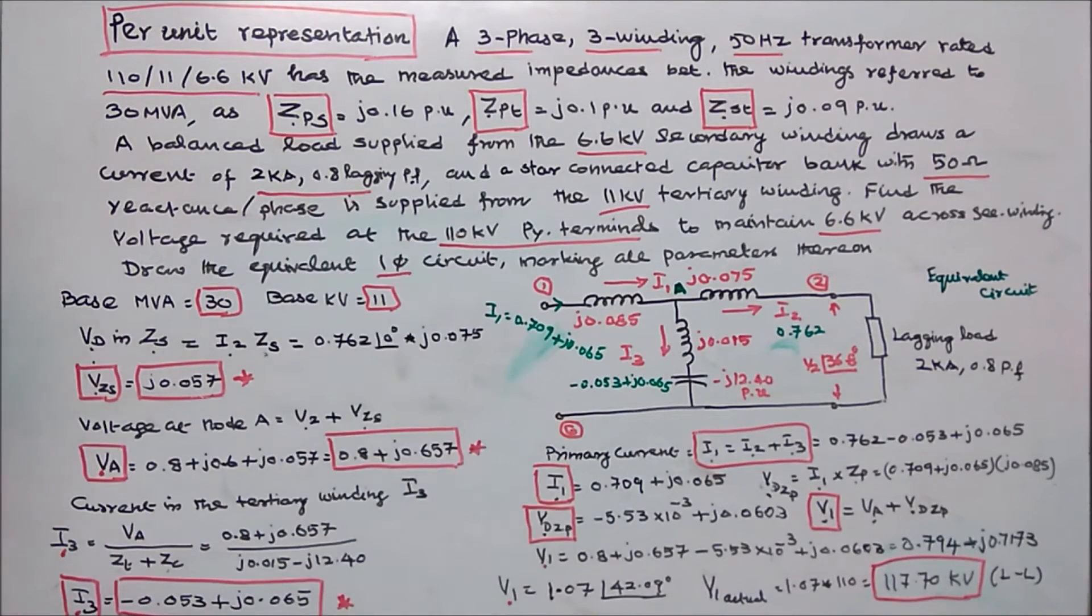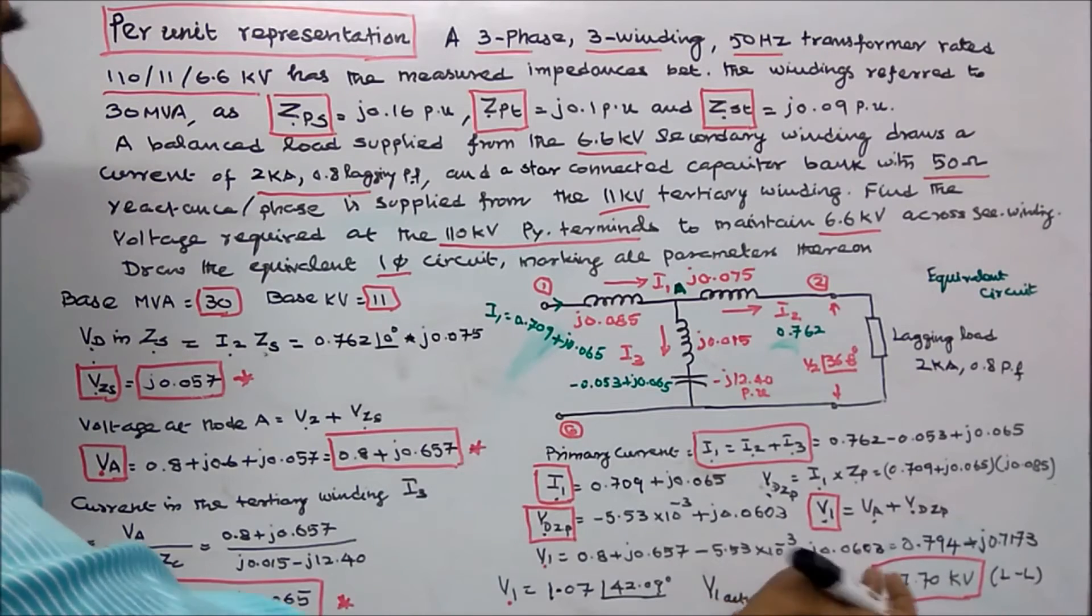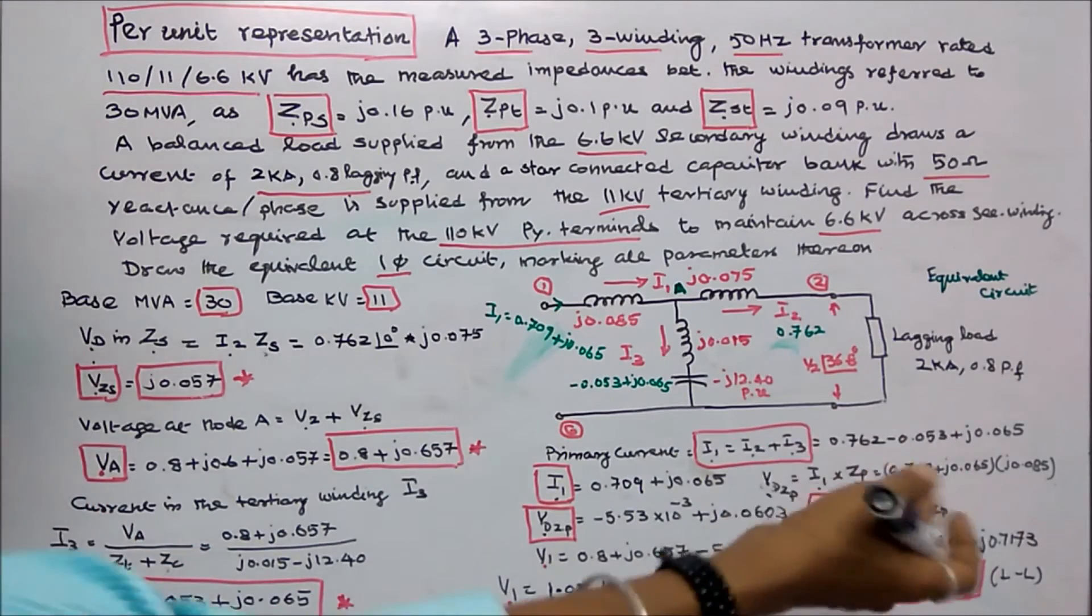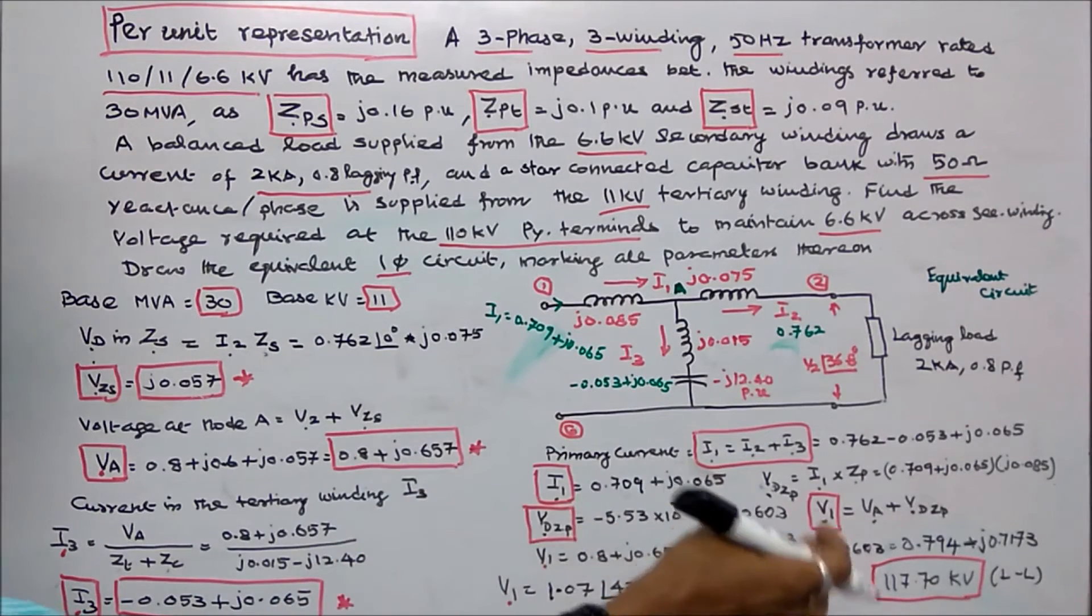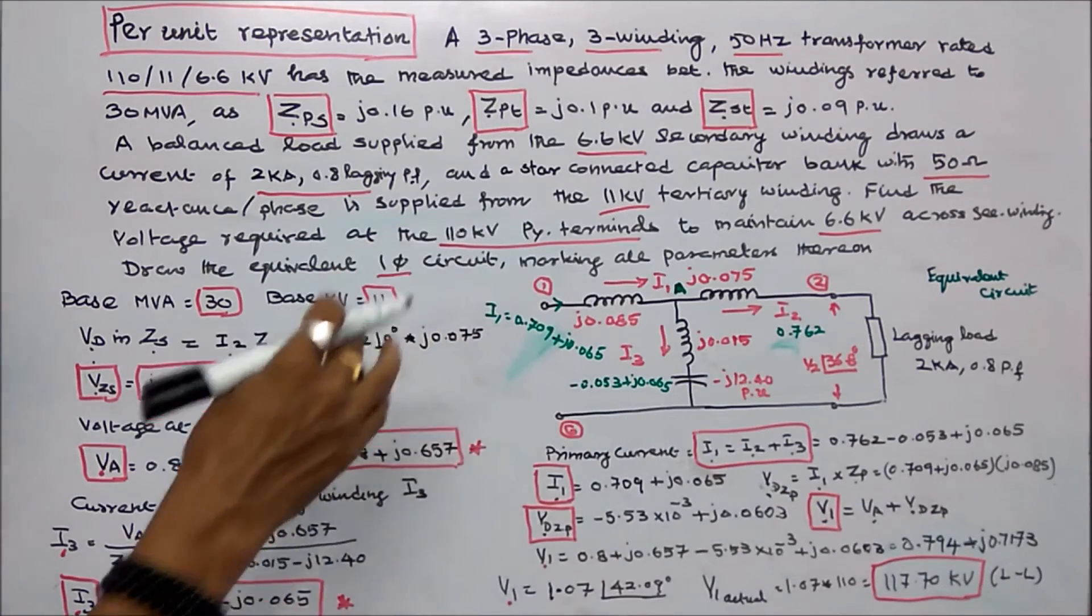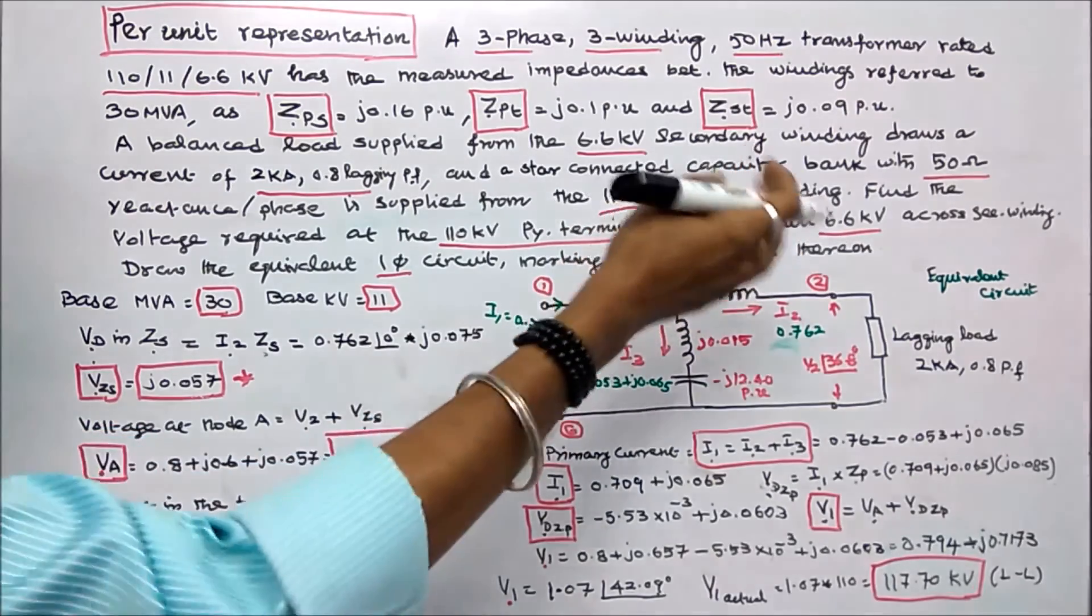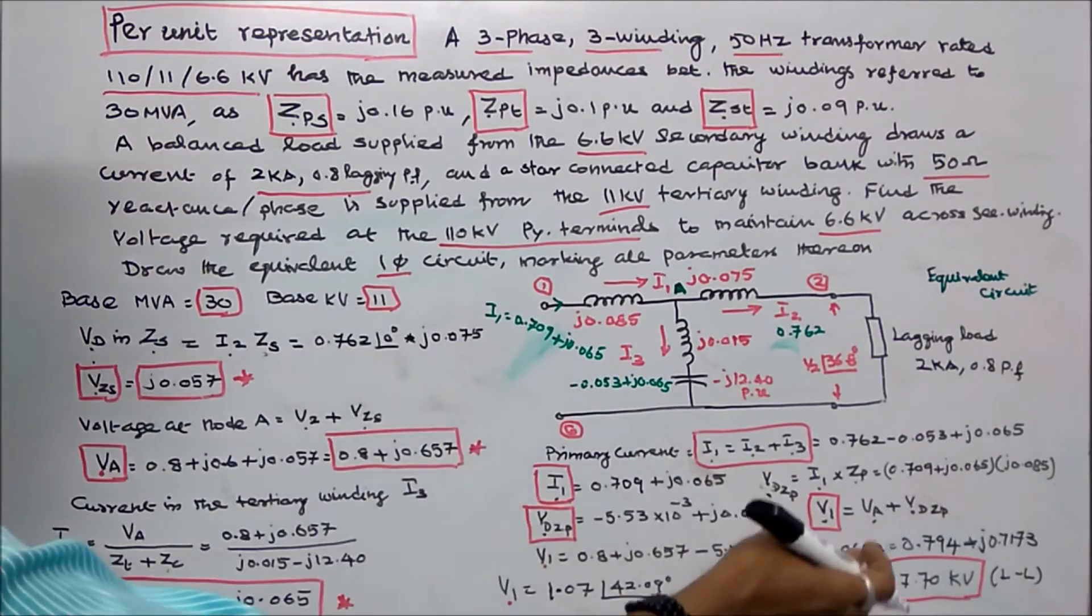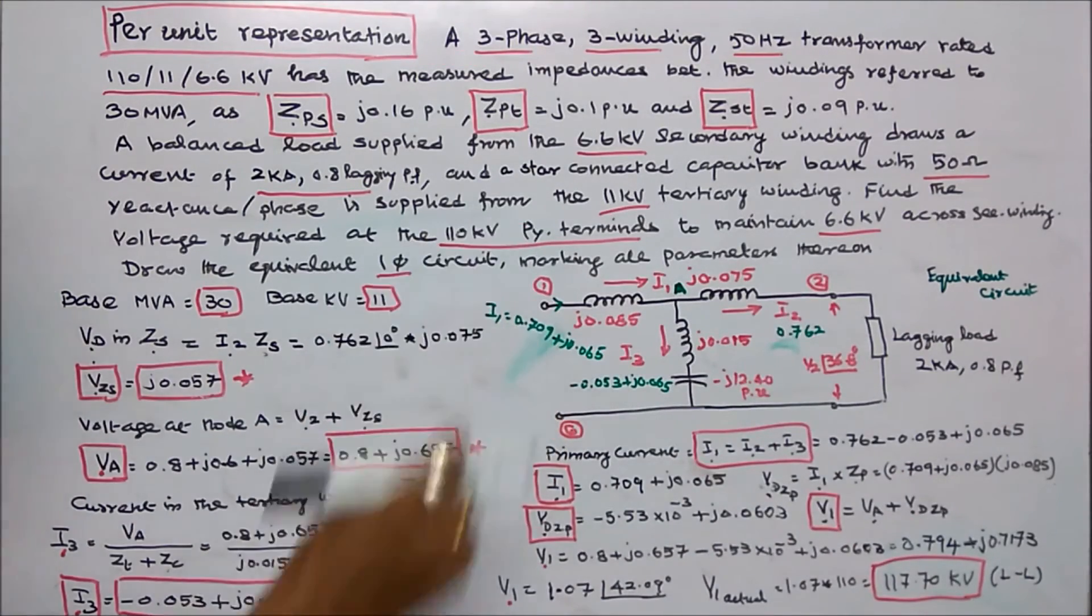So I can easily calculate the actual value. V1 actual is equal to 1.07 into 110, that is equal to 117.70 KV, that is line to line voltage. So 117.70 KV at primary terminals is required to maintain 6.6 KV across secondary winding. The answer is 117.70 KV line to line voltage. This is the equivalent circuit.